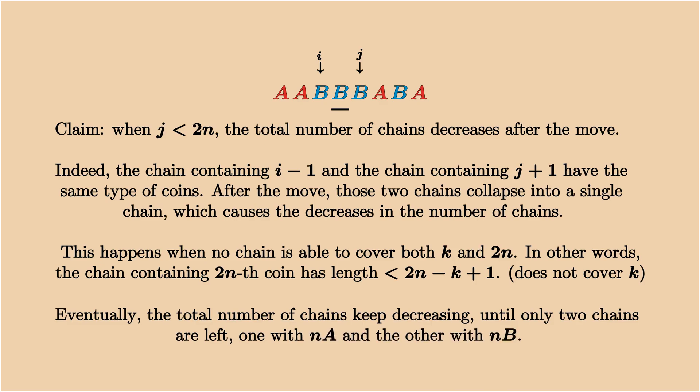If this happens again and again, the number of chains will keep decreasing until only two chains are left, one contains n coins of A and the other contains n coins of B. That's what we are looking for.